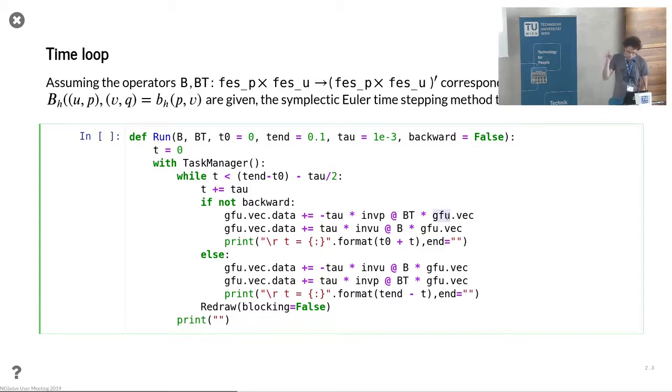Once we updated the pressure, we make an update of the velocity with the new pressure. That's a symplectic Euler scheme.